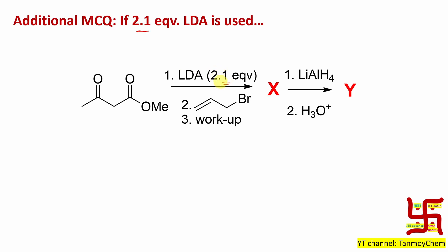Now with LDA at 2.1 equivalents: the first equivalent of LDA will abstract this proton, and the second equivalent of LDA will abstract this other proton. So right now two carbanions are generated. Which one will act as the nucleophile for SN2 with this allyl bromide? For that purpose you need to understand at which carbon the charge density is higher.